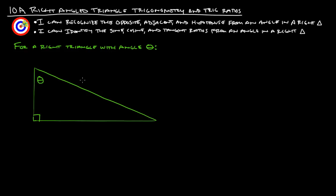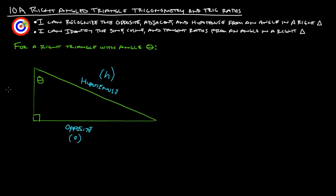The one that most people will remember is that the side opposite the right angle is the hypotenuse. So this is the hypotenuse — we usually just write that as H. The side from this angle to the side that's across from it is considered the opposite, and we usually write that as O.